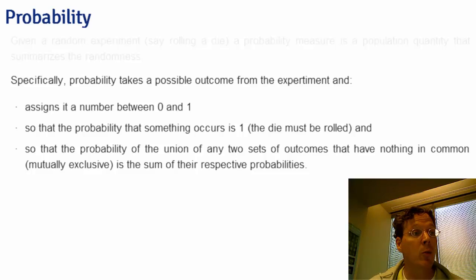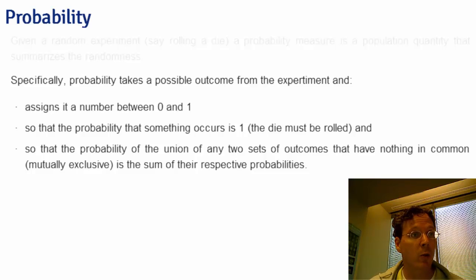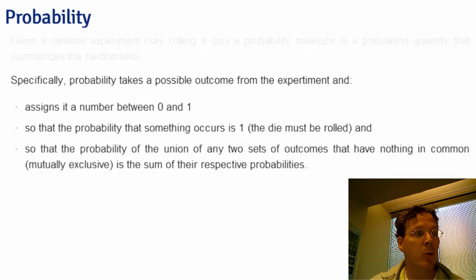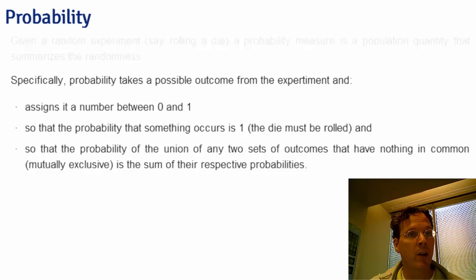You have to have the rule that the probability that something occurs — in other words, that you roll the die and you get a number — must be one. And then the probability of the union of any two sets of outcomes that have nothing in common must be the sum of their respective probabilities.